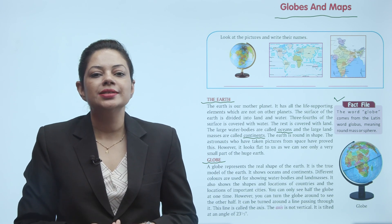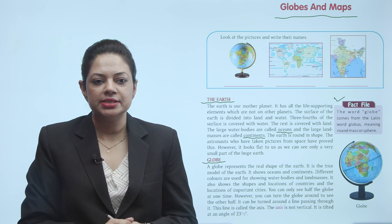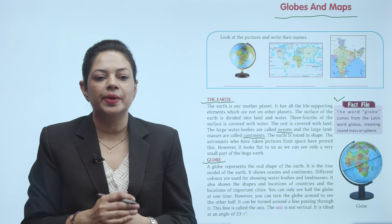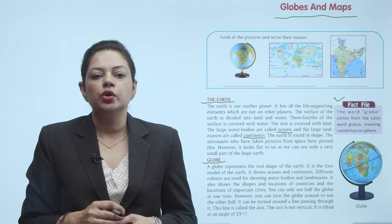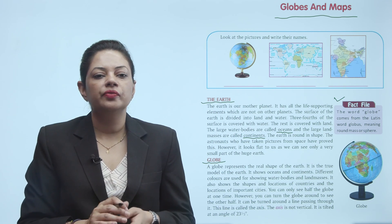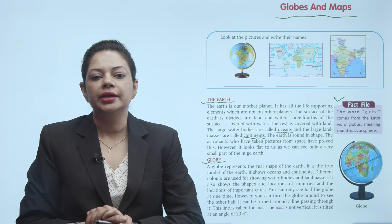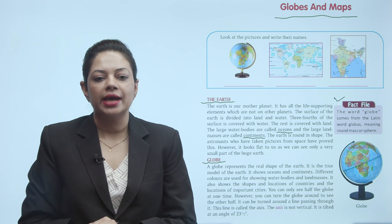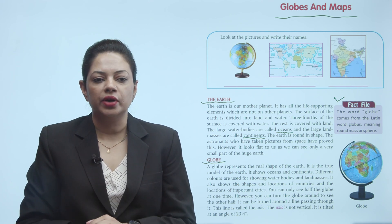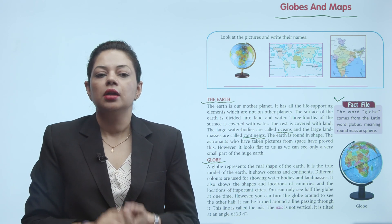A globe shows oceans and continents. Different colors are used for showing water bodies and land masses. It also shows the shapes and locations of countries and the locations of important cities. You can only see half the globe at one time, however you can turn the globe around to see the other half. It can be turned around a line passing through it called the axis. The axis is not vertical — it is tilted at an angle of 23 and a half degrees.